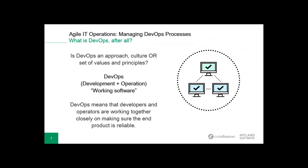You can ask what DevOps is — is it an approach, a culture, a set of values, or a principle? Technically, we can call it all of those. The most important thing is that DevOps is a practice that brings development and operation together. The merging of development and operation brings together formally separated roles and teams, aligning their objectives. Traditionally, the development team aims to include as many amazing features in the product as possible, while the operation team wanted to make sure the system was reliable and stable at all times. With DevOps, they share the goal of delivering dependable software that perfectly fits the requirements of the user — we can simply call this working software.